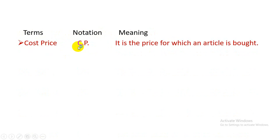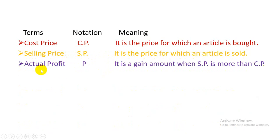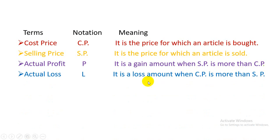Cost price (CP): it is the price for which an article is bought. Selling price (SP): it is the price for which an article is sold. Actual profit (P): it is the gain amount when SP is more than CP. Actual loss (L): it is the loss amount when CP is more than SP.